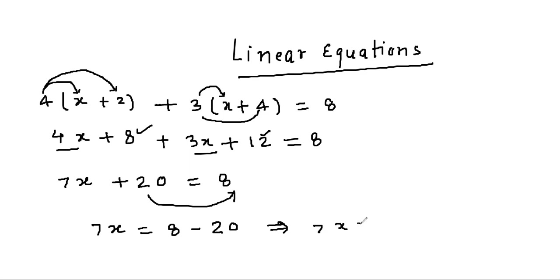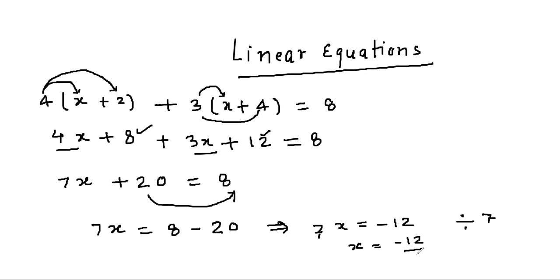This gives 7x = -12. We want to remove this 7 from the LHS, so we divide by 7, and we get x = -12/7.